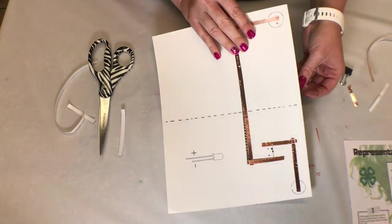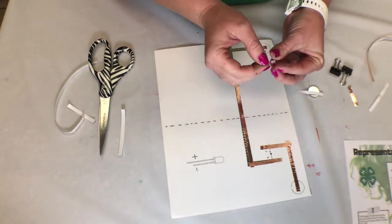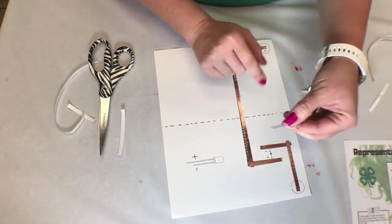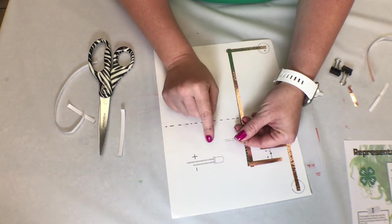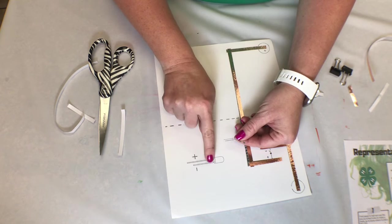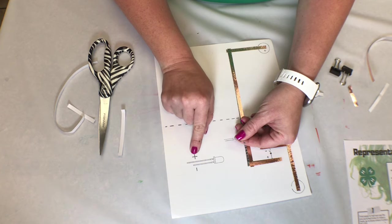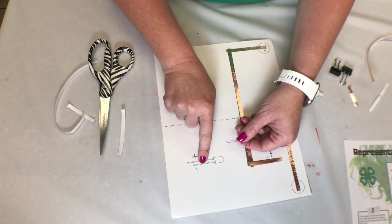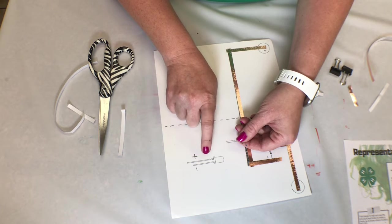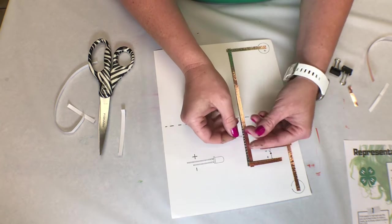The next step we're going to do is we're going to mount the LED. So on your LED, as in this picture, one piece of wire is shorter than the other. The shorter piece is the negative. The longer piece is the positive. And that's very important for you to remember.